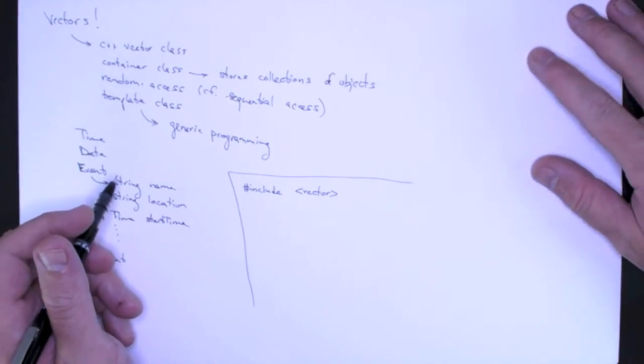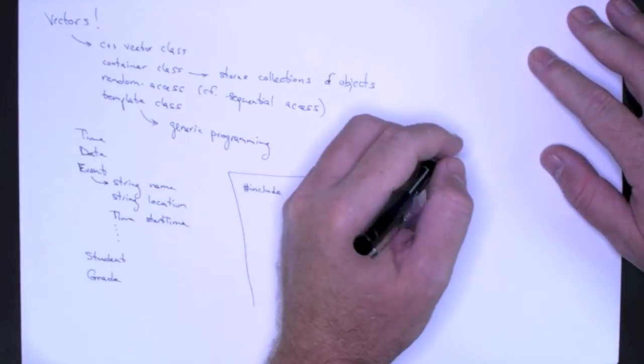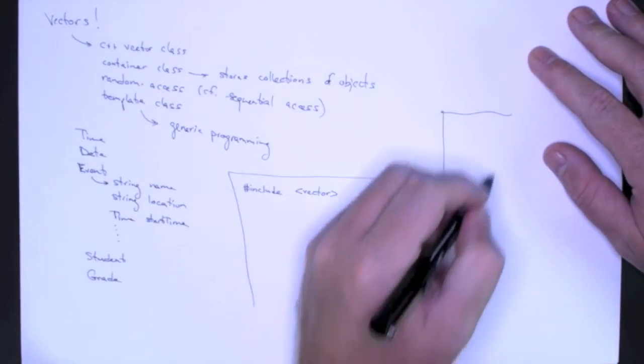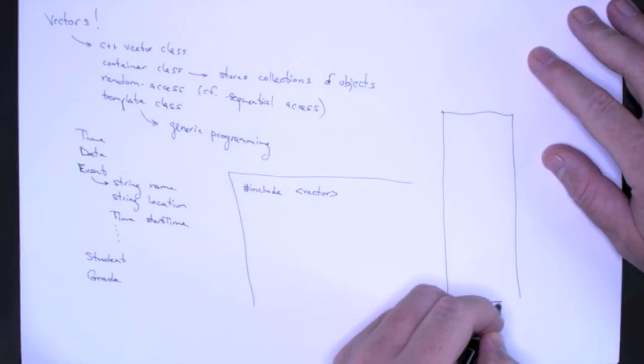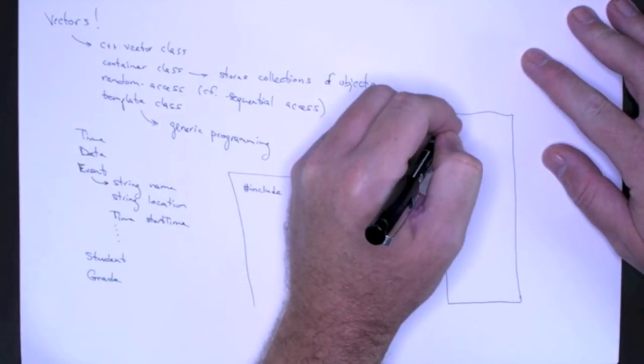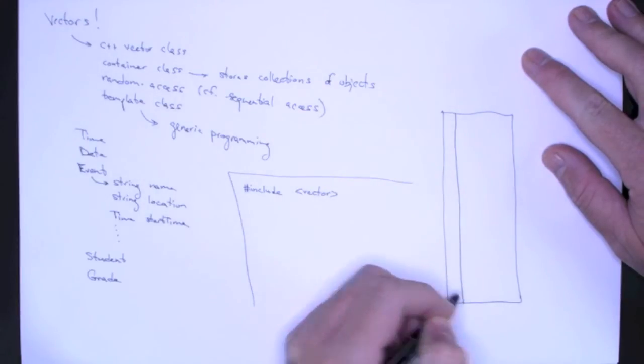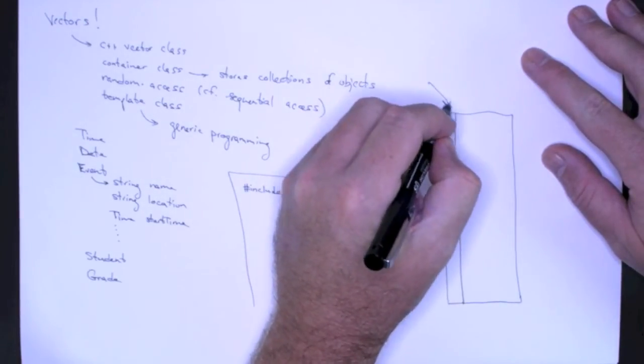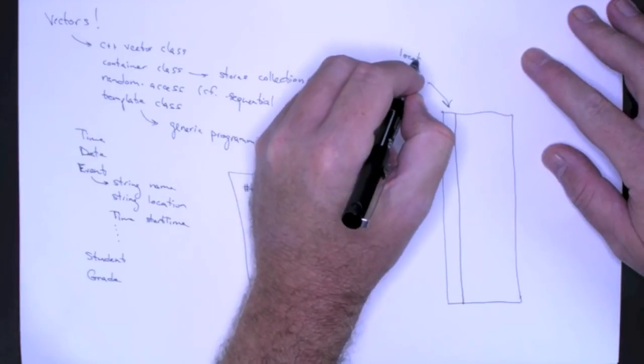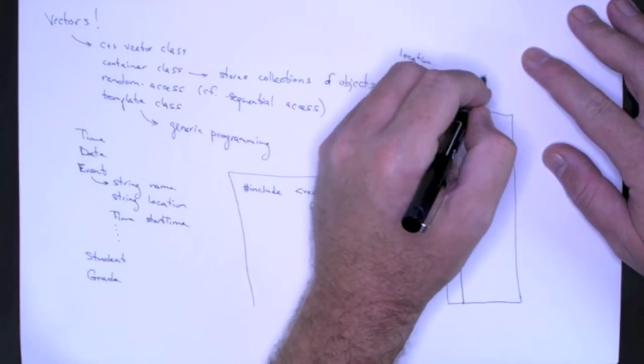And the basic idea behind a vector is that you have a collection. And really, the vector is divided into two parts. You kind of have the location, and then you have the contents.